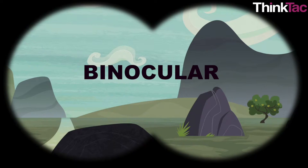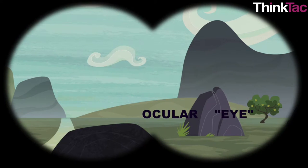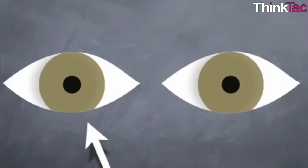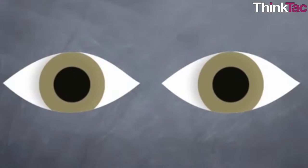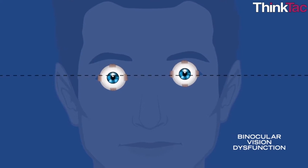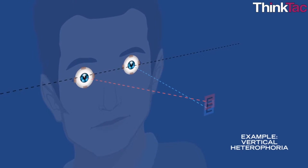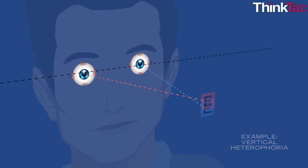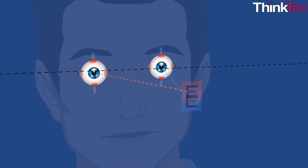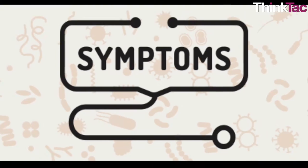The term binocular comes from the Latin word bini, meaning two, and the word ocular, meaning eye. When both eyes of an otherwise binocular animal cannot coordinate with each other, it leads to binocular vision dysfunction. Muscles around the eyes are normally supposed to help the eyes work together, but when this does not happen, the eyes get tired trying to compensate for misalignment, leading to a variety of problems. Symptoms include double vision, headaches, lightheadedness, unsteadiness, light sensitivity, neck and shoulder discomfort from twisting the body to focus, and anxiety.